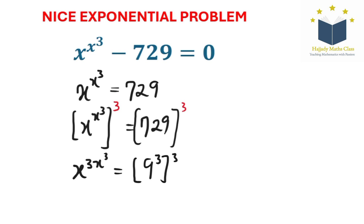Then rewriting this here, I'm going to have x to the power of 3x to the power of 3 equal 9 to the power of 9, which is 3 times 3 multiplying.